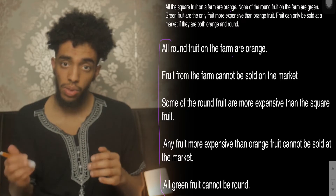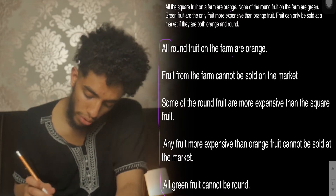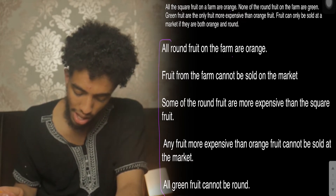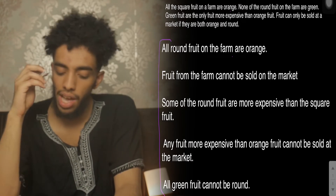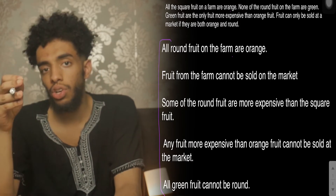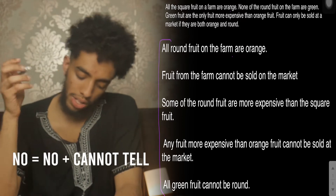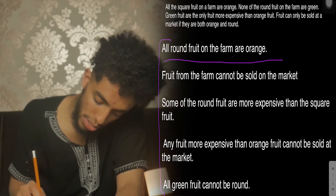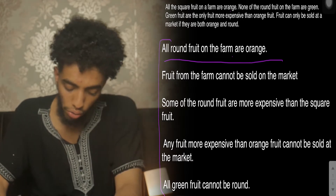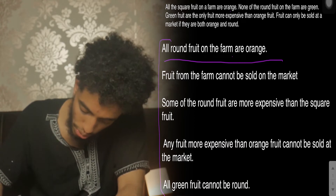On the iPad now, these statements here range from 'all round fruits on the farm are orange' all the way to 'all green fruits cannot be round.' You have to make a judgment: it's either yes, they are valid conclusions; no, they're not; or you cannot tell. The first conclusion is: all round fruit on the farm are orange.